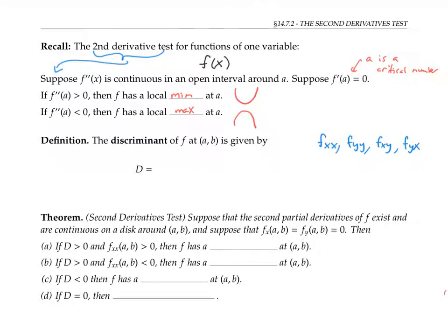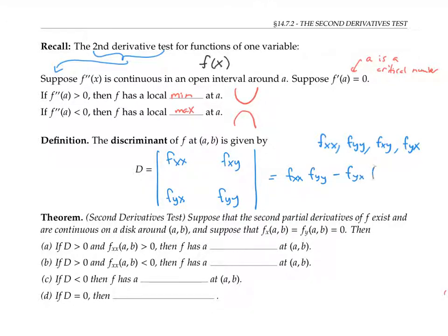We'll need to refer to an expression involving all of these second derivatives called the discriminant. The discriminant at a point (a, b) is given by the determinant of the matrix with entries f_xx, f_xy, f_yx, f_yy, all evaluated at the point (a, b). In other words, that's f_xx · f_yy minus f_yx · f_xy evaluated at (a, b). In most situations, this can be rewritten as f_xx · f_yy minus (f_xy)², since f_yx equals f_xy as long as these partial derivatives are continuous near the point (a, b).